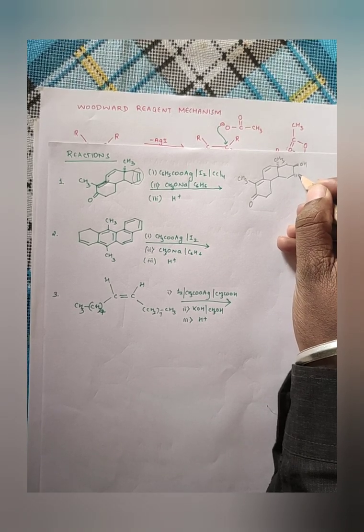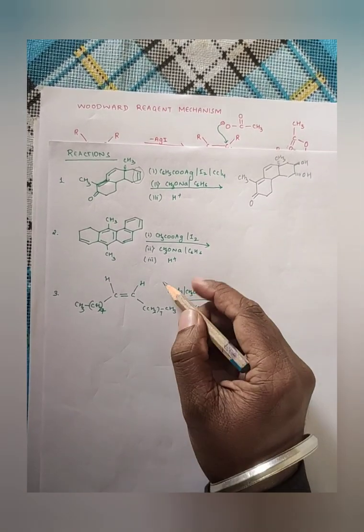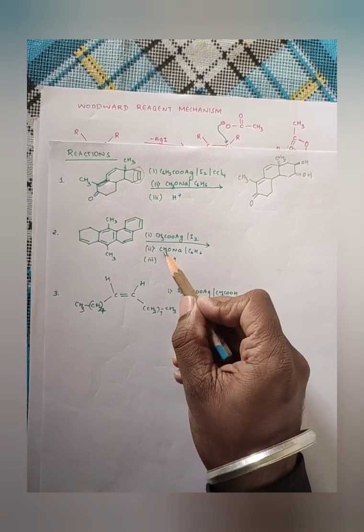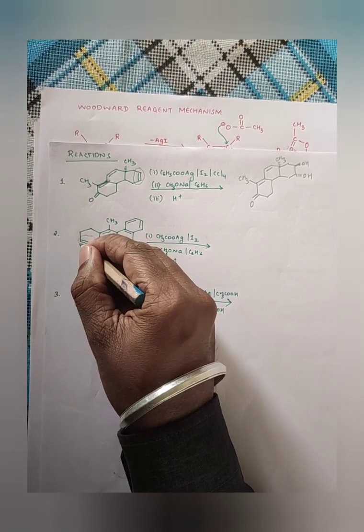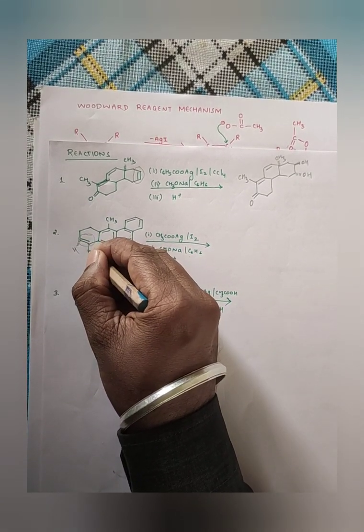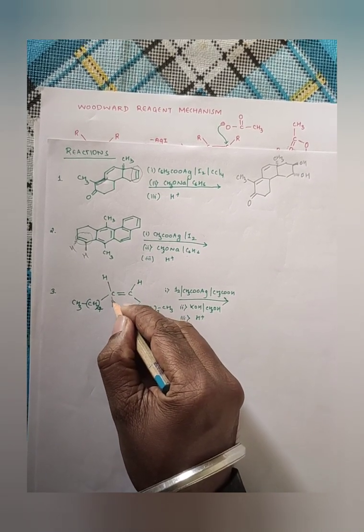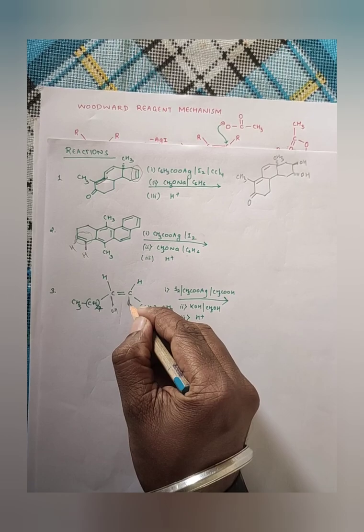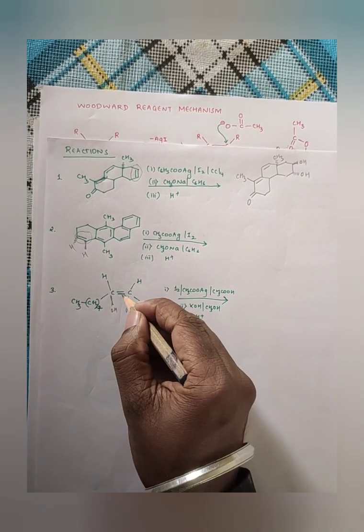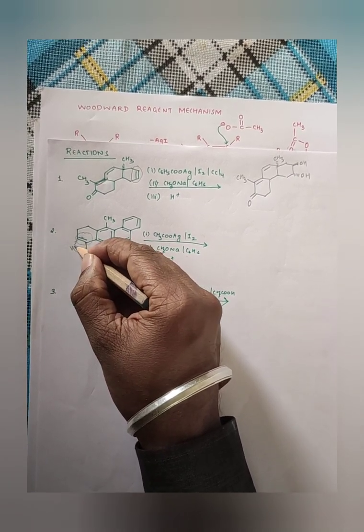In the next example, this is also a Prevost reagent, so the double bond reacts to give one OH below the plane and one OH above the plane — a trans product. In the final example, it is Woodward reagent, so both OH groups come on the same side — a cis diol is the product. Hope you have understood. Please like the video, share it, and subscribe to the channel. Thank you, keep watching for the next video.